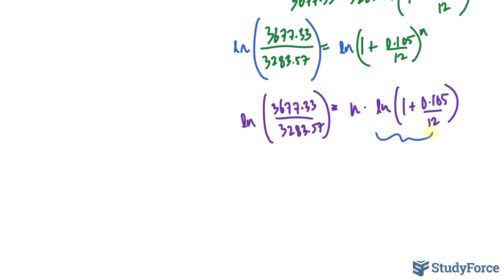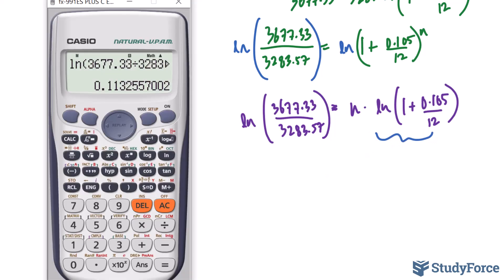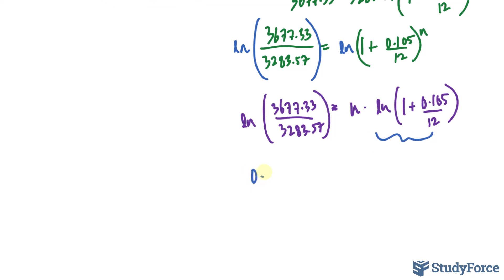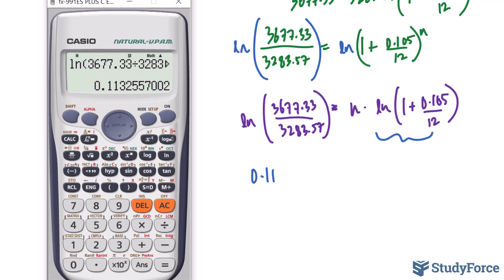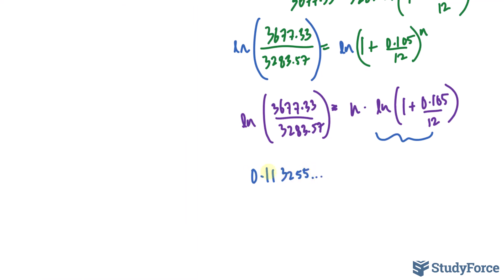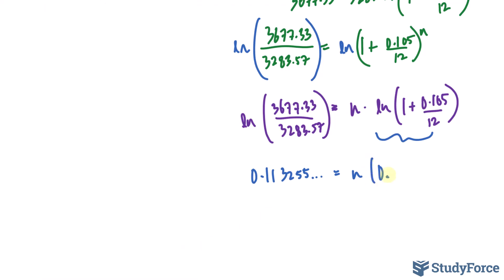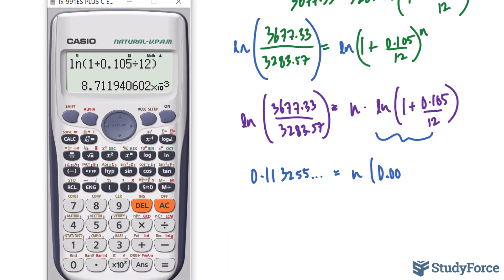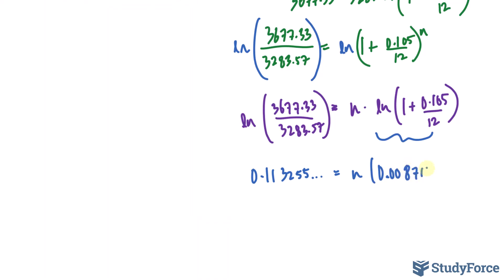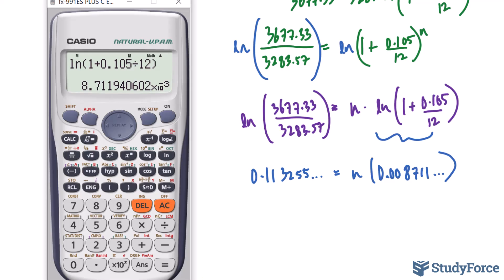And whatever that is, we divide both sides by that amount. So, I'll write this value down, 0.113255. You want to keep as many decimal places as you can. And on the right side, we have ln 1 plus 0.105 divided by 12. That gives us that value. And we divide both sides of the equation by that value. So, that's 0.008711 and so on. We divide both sides by it.